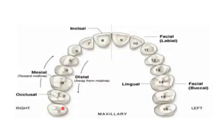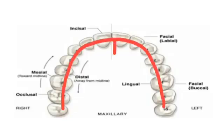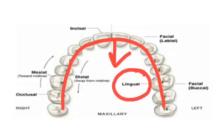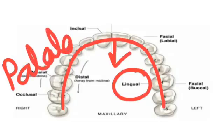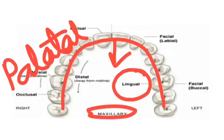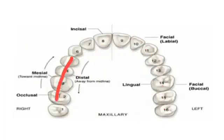The surface of both anterior and posterior teeth which is facing towards the tongue is called the lingual surface. This surface is also called the palatal surface in case of maxillary teeth, because in maxillary teeth this surface is facing towards the palate instead of the tongue.